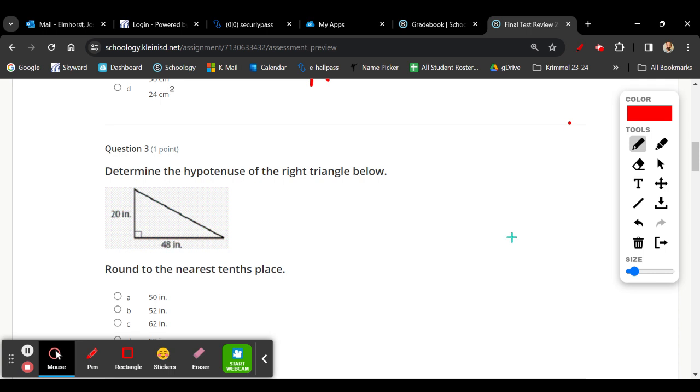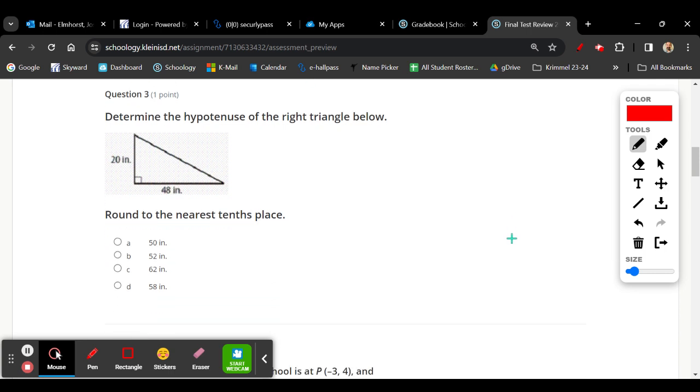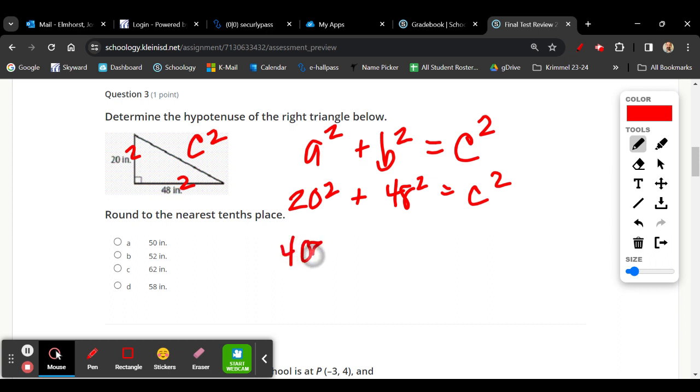So number 3, determine the hypotenuse of the right triangle. For the hypotenuse, we are going to use the formula a squared plus b squared equals c squared. For a right triangle, we can determine the missing side length by squaring the two other sides and then comparing to the third side length. So we have 20 squared plus 48 squared, which is equal to c squared. So 20 squared is going to be 400.